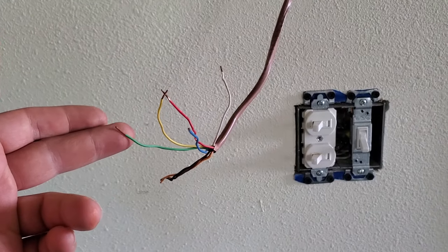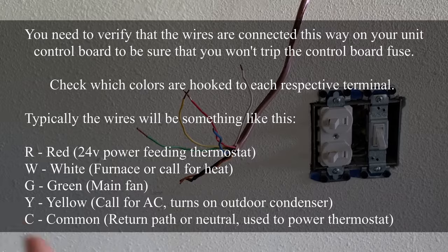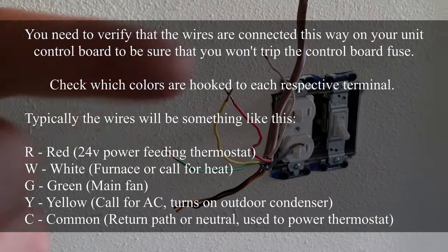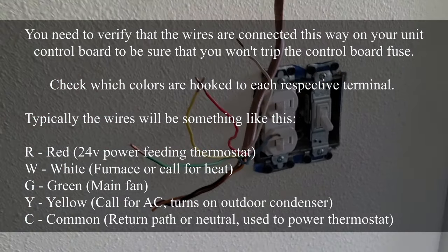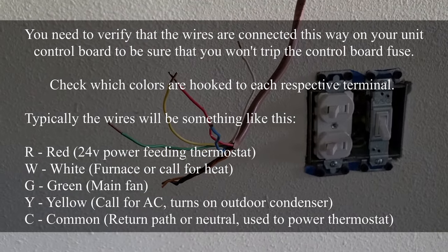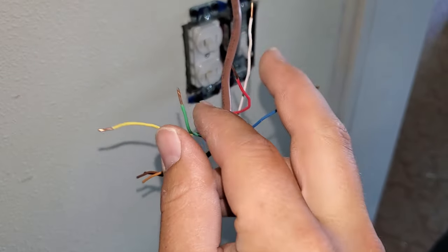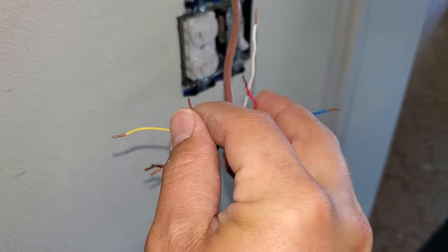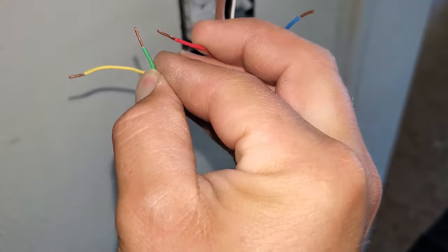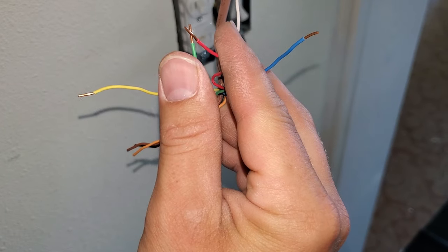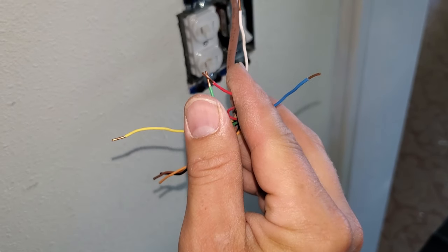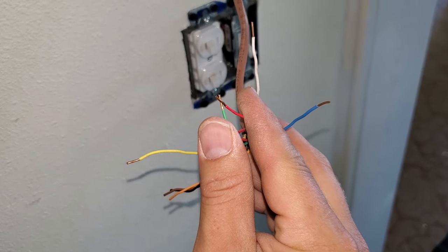Right now we have the air conditioning running and I'm going to show you how I did that and explain to you what all these different wires are for on this particular thermostat. You can see we have the red and the green. This is going to turn on the fan, so let's go ahead and cross these guys right here. There you hear the fan came on just fine.